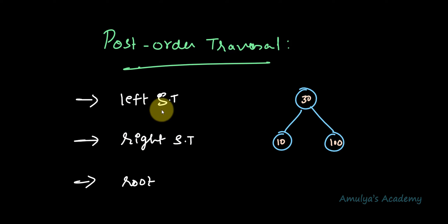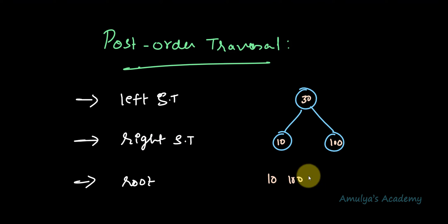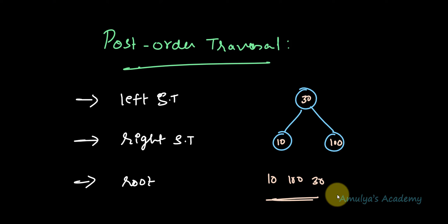For example, if I have nodes 10 and 100: first you need to visit the left subtree (10), next the right subtree (100), and lastly the root node. This is the order in the postorder traversal algorithm.